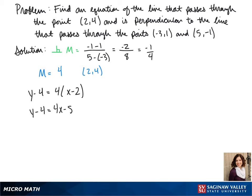We distribute the 4 to the x and the minus 2. Then we add 4 to the other side, so our line in slope-intercept form is y equals 4x minus 4.